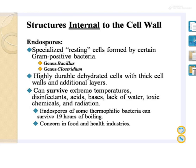Most bacteria have the ability to produce spores or endospores. These are specialized resting cells formed by certain gram-positive bacteria — for example, Bacillus or Clostridium. They are highly durable, dehydrated cells with thick cell walls and an additional layer. They can survive extreme temperatures, disinfectants, acid, bases, lack of water, toxic chemicals, and radiation. Endospores of some thermophilic bacteria can survive 19 hours of boiling, which is a concern in the food and health industry, which is why parenteral preparations must be free from microbial contamination and spores.